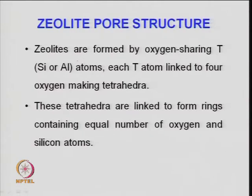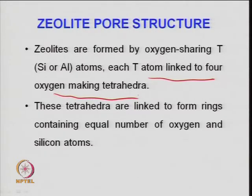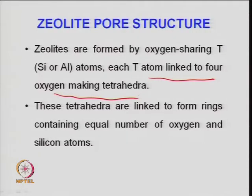The zeolite structure is formed by oxygen-sharing T-atoms. T means silicon or aluminum — each T-atom is linked to 4 oxygen atoms, making a tetrahedron of aluminum silicate. Silicon is at the center and oxygen is connected at the corners of the tetrahedron. These tetrahedra are linked to form rings containing equal numbers of oxygen and silicon atoms.